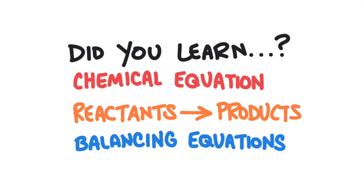Did you learn everything in this lesson? You learned that a balanced chemical equation works just like a recipe, only it uses units of moles. The compounds on the left side of the equation are called reactants, and the compounds on the right side are called products. You can balance any chemical equation by following these steps: first, balance the metals; second, balance the non-metals except for hydrogen and oxygen; third, balance hydrogen; and then balance oxygen.